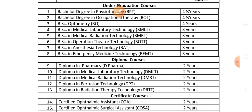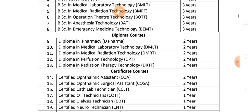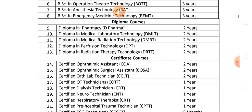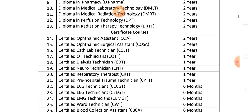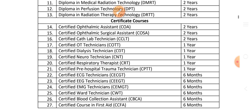Certificate courses are also available. These include Ophthalmic Assistant — 2 years; Cath Lab Technician — 1 year; Neuro Technician; Respiratory Therapist; Pre-hospital Trauma Technician; ECG Technician; EEG Technician; EMG Technician; and Blood Collection. Duration for each will be provided.